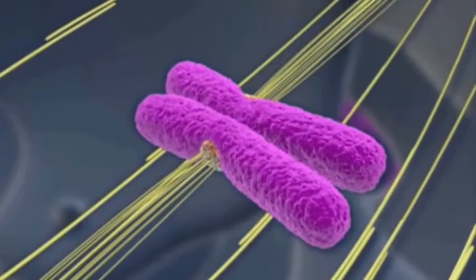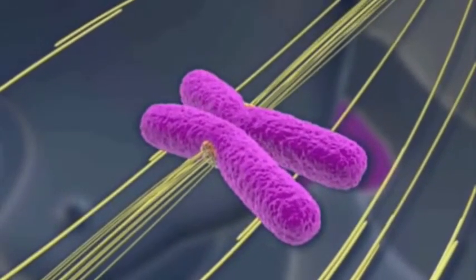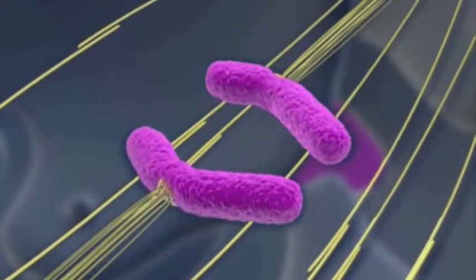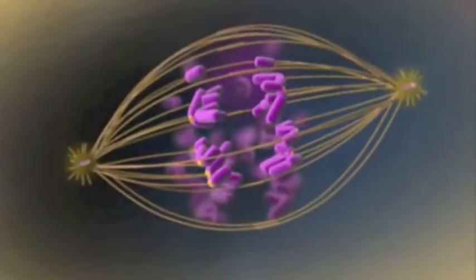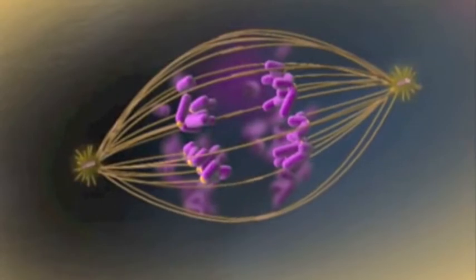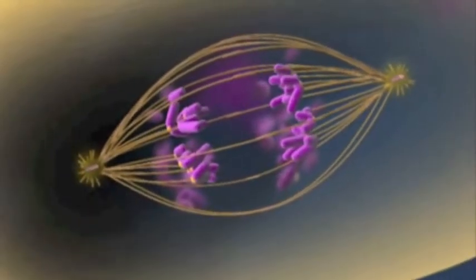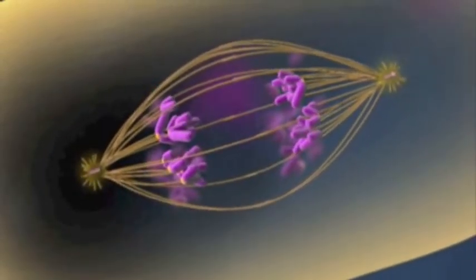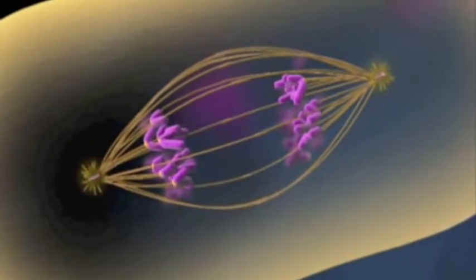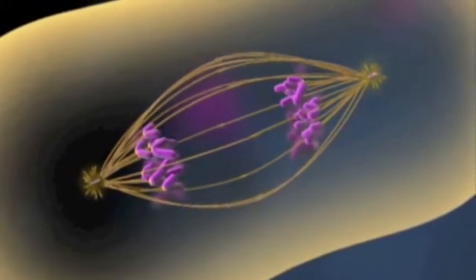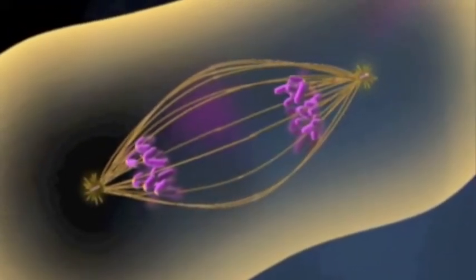The sister chromatids are released from each other, each becoming a full-fledged chromosome. They are moved toward opposite poles of the cell, pulled along the spindle fibers attached to them. At the same time, overlapping spindle fibers that are not attached to chromosomes continue to lengthen, pushing the poles farther apart.